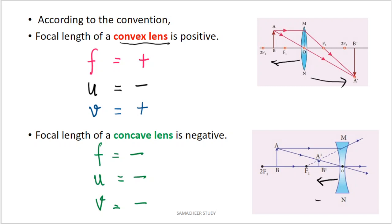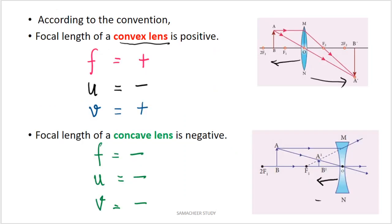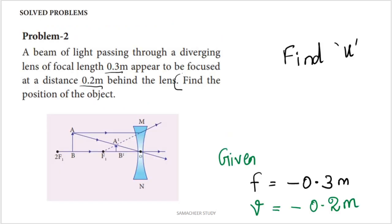Now let's look at solved problem number 2 from the textbook. A beam of light passing through a diverging lens of focal length 0.3 meter appears to be focused at a distance 0.2 meter behind the lens. Find the position of the object. We need to find u, given focal length F and image distance V. A diverging lens is a concave lens, so the sign convention applies: F is negative.